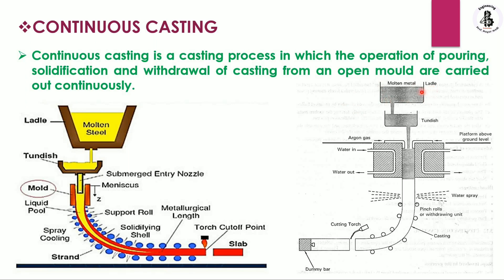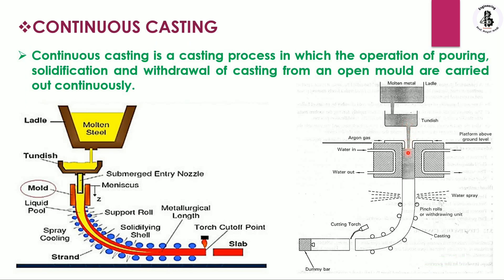From the ladle, the molten metal is transferred into a tundish, and after the tundish it controls the flow of that molten metal, which then travels into the mold. The mold is made of copper or sometimes graphite materials.